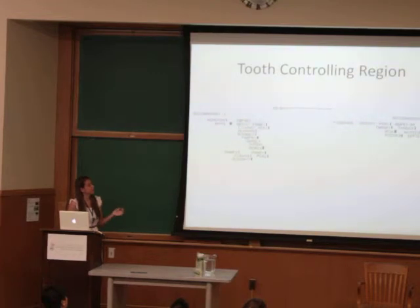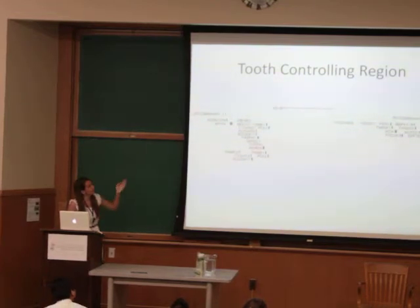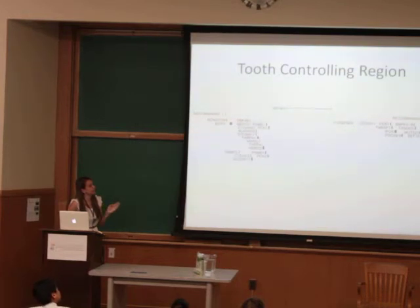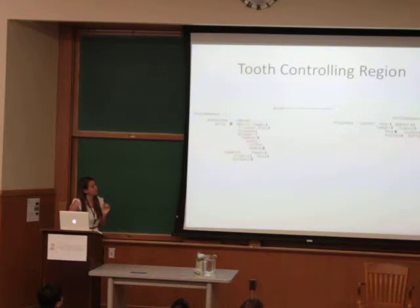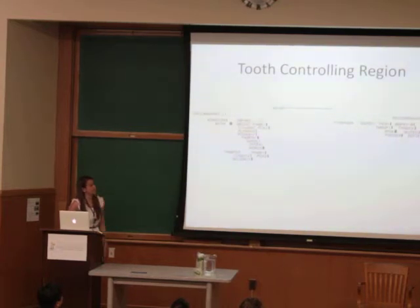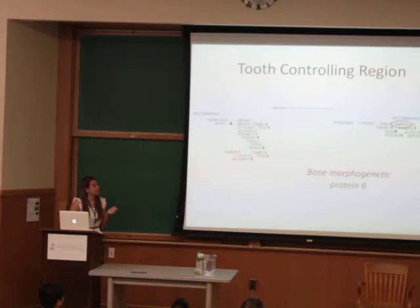Here's the tooth-controlling region once it had been narrowed down. As you can see at the top, the boundary points of this region are determined by the recombination breakpoints of the two experiments we conducted, and these are the 28 genes within the region. One of these genes is bone morphogenetic protein 6, or BMP6.